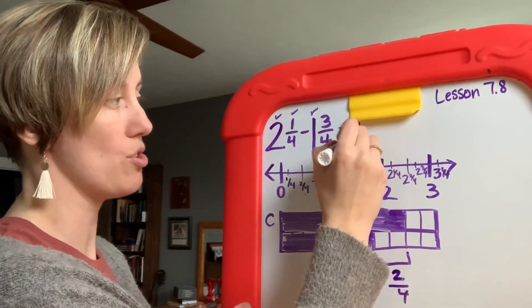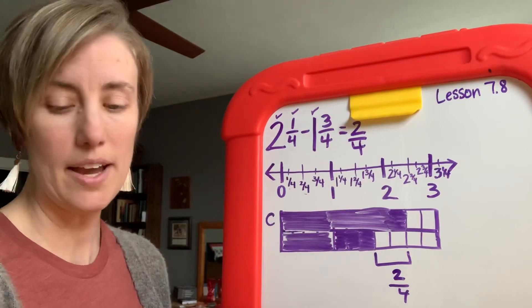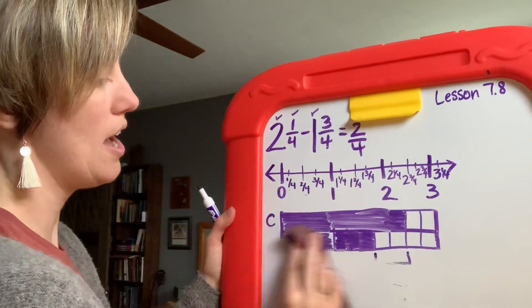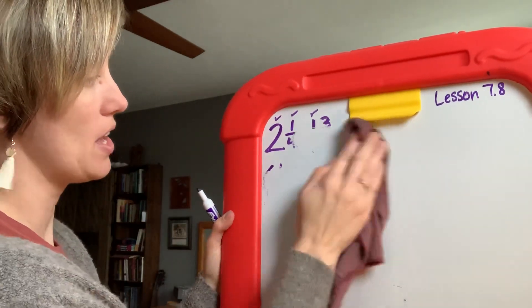Now it's not two whole things, it's 2/4, so the difference between 2 and 1/4 and 1 and 3/4 is 2/4. Okay, that is how you would subtract mixed numbers by using a model.